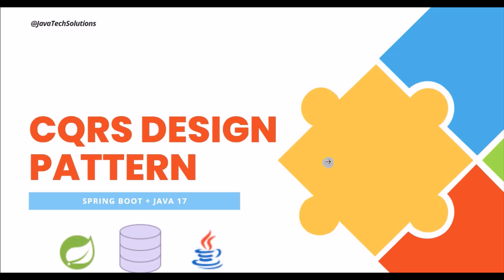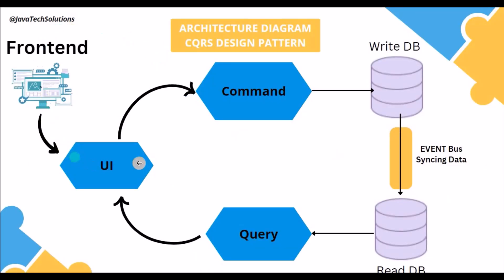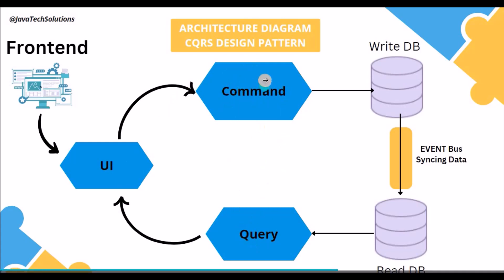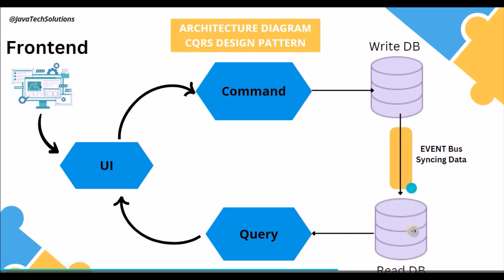If the read application is consuming more resources, we can scale it independently while keeping the write side as-is. Now let's look at the architectural diagram of CQRS. From the frontend — which can be a mobile app, a portal built in Angular or React — it calls two different sides: command and query. The command side is responsible only for writing data to the write DB, and the query side fetches data from the read DB.